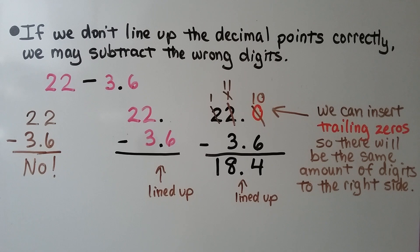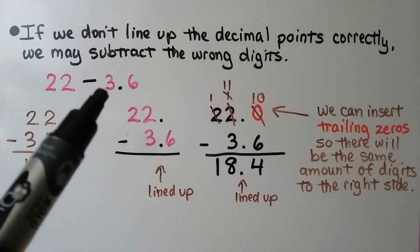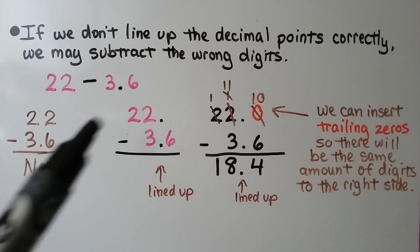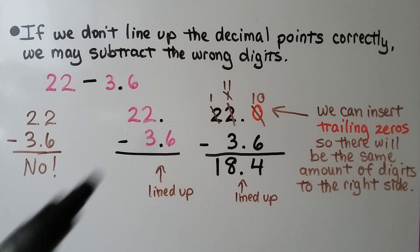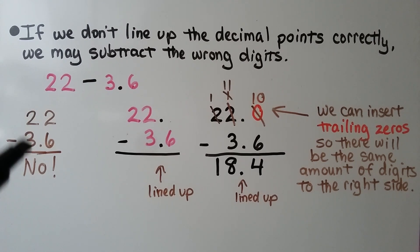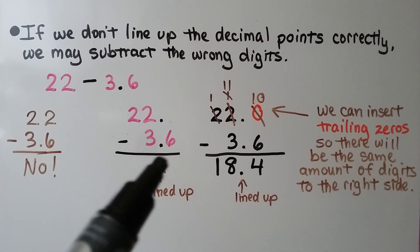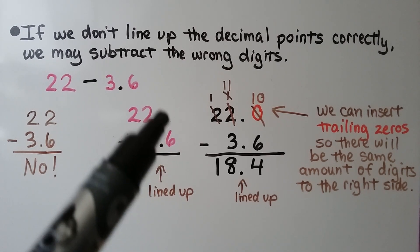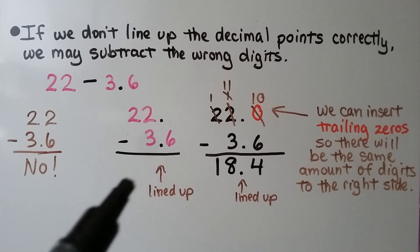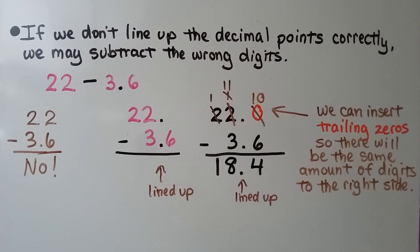If we don't line up decimal points correctly, we may subtract the wrong digits. Here we have 22 minus 3 and 6 tenths. We have 2 digits here and 2 digits here, and we might accidentally stack them incorrectly — but that's wrong. 22 is a whole number and 3 is a whole number, so we would have decimal points lined up correctly. And we can insert a trailing zero so there will be the same amount of digits to the right side.